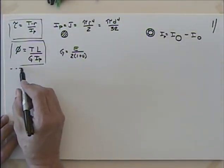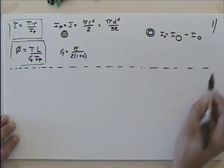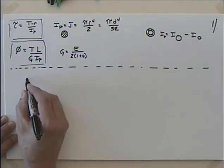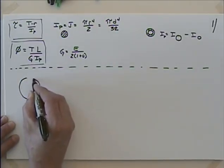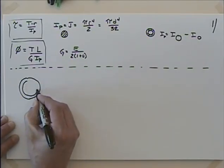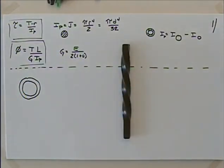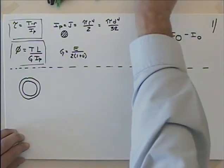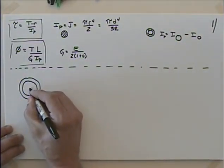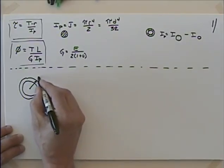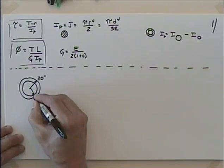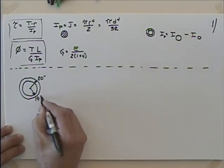I'd like to talk about hollow shafts and some efficiencies that can be had there. I'm going to look at three cases involving circular shafts — that's the most common cross section. The analysis we've done applies to circular cross sections; square cross sections are easy to see twisted but we don't really have the equations to deal with torsion in a square cross section.